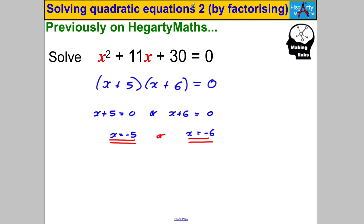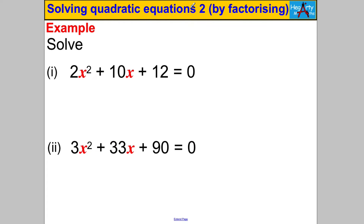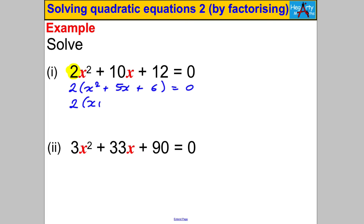Make sure you've watched 'Solving Quadratic Equations 1 by Factorizing' before attempting this skill. What's different in this video is there is a number other than 1 in front of x². The coefficient of x² is 2 in the first example. In these simple cases, before you try factorizing, think: can I factor out a common factor? Here you can factor out the 2 and get x² + 5x + 6 = 0.